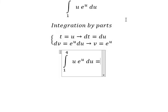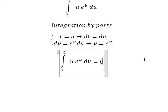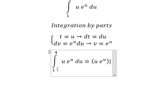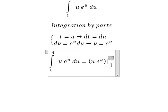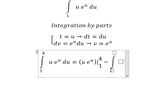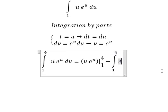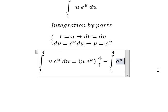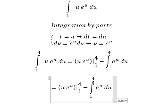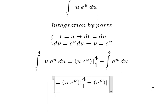Applying the integration by parts formula, we have t multiplied by v — that is u times e to the power of u — evaluated from 1 to 4, minus the integral from 1 to 4 of e to the power of u du. The integral of e to the power of u is e to the power of u, evaluated from 1 to 4.